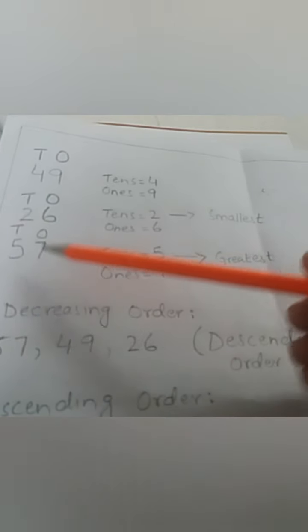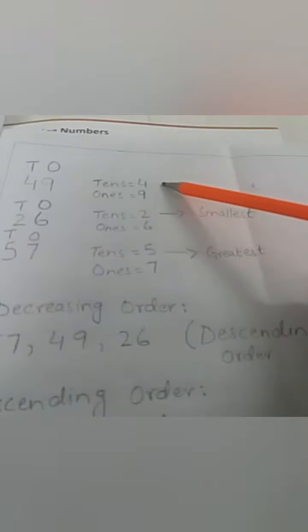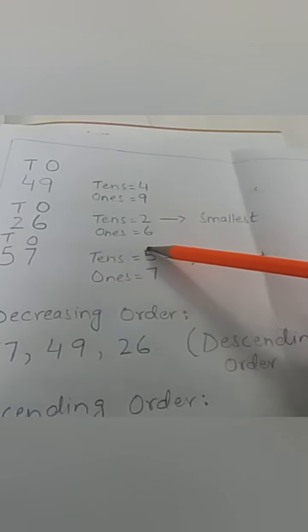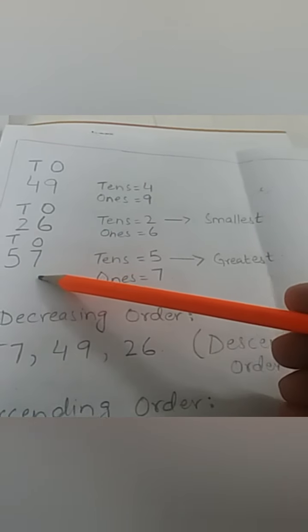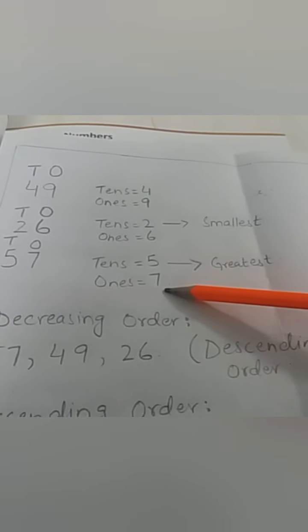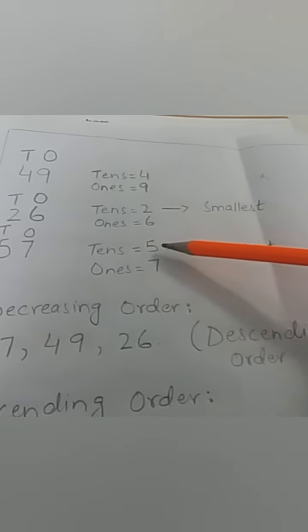Now let's see. Here we have the number 49, 26, and 57. 49 has four tens and nine ones. 26 has two tens and six ones. 57 has five tens and seven ones.